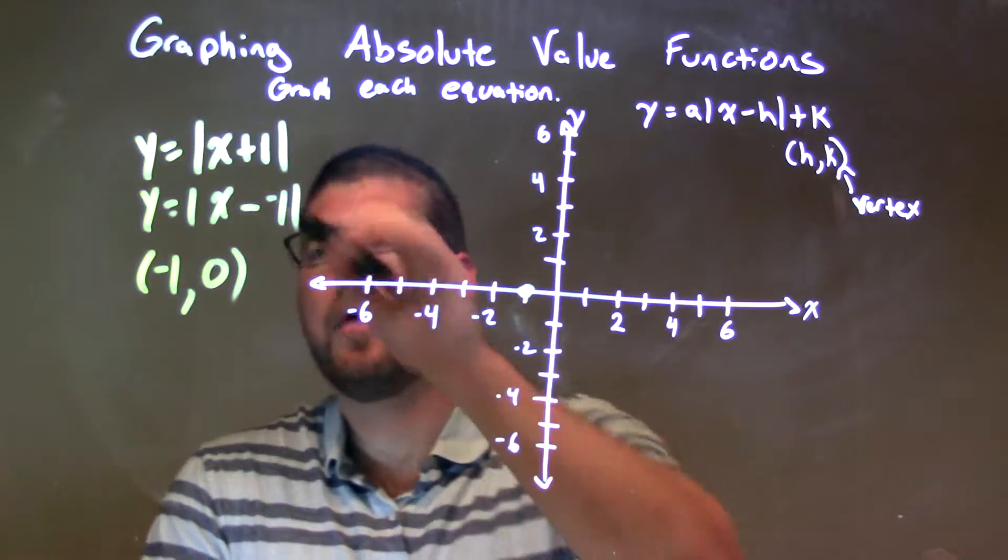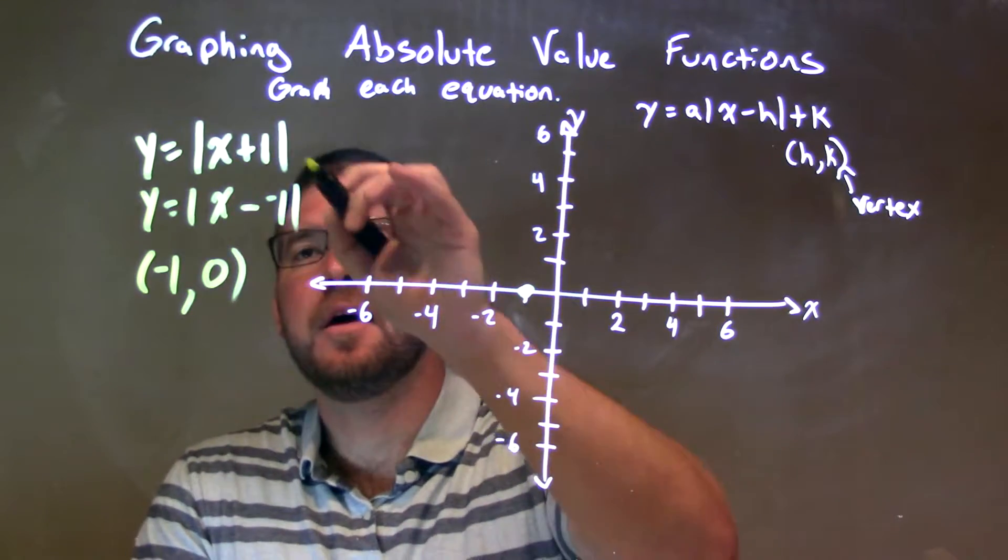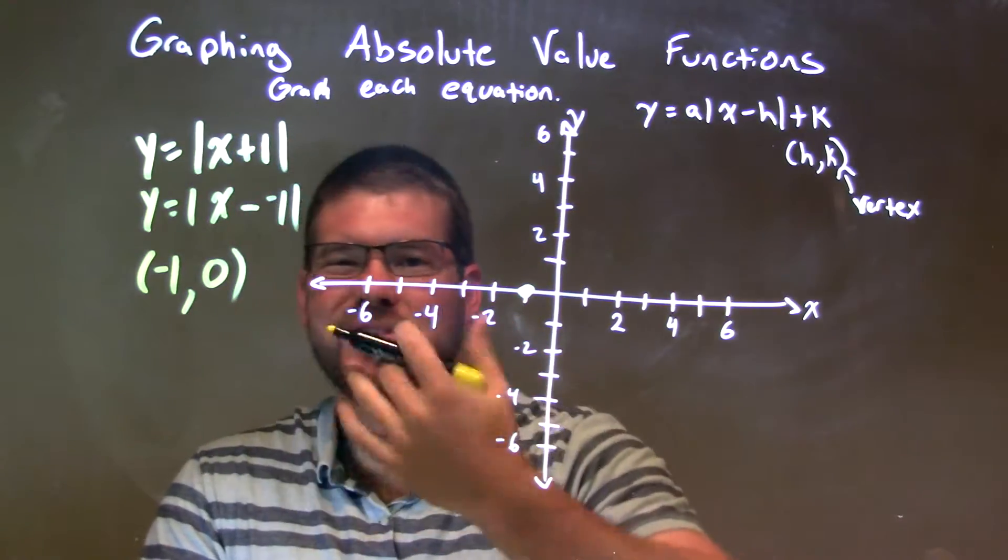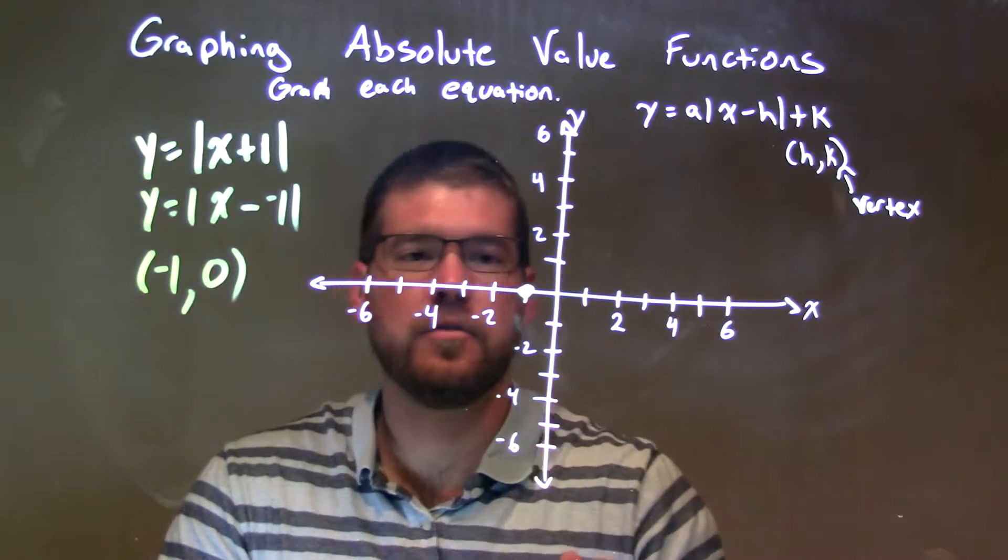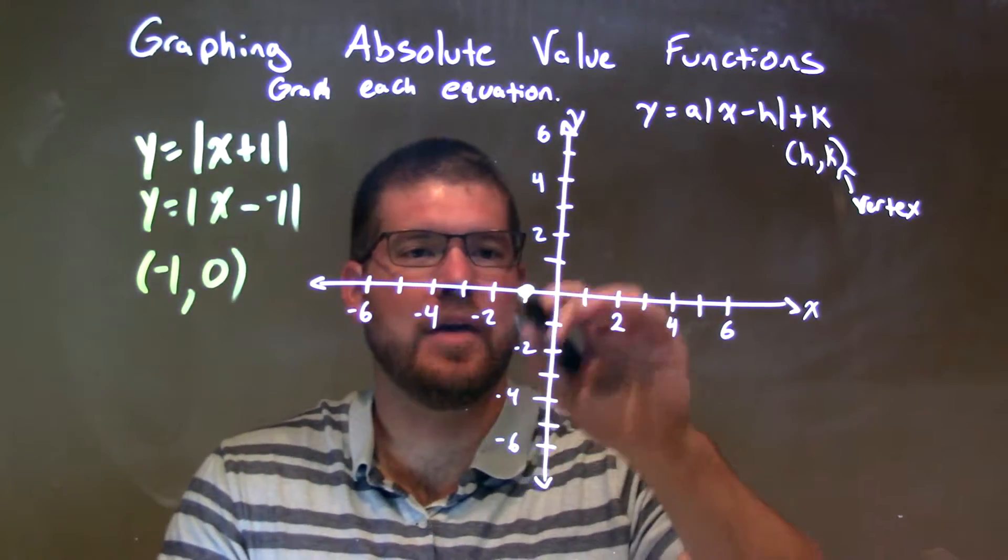Now, our a value that's in front wasn't really given, but this is being multiplied by a positive 1. So we have a V, a normal V.